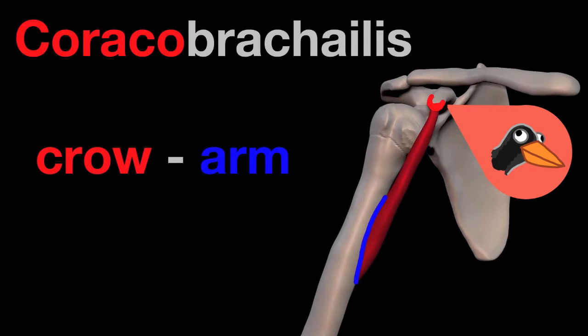So when you see coraco, think crow, and when you see brachialis, think arm.